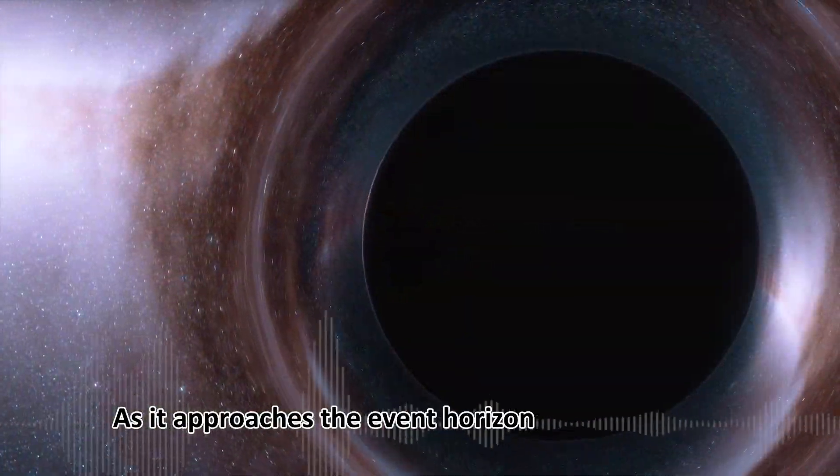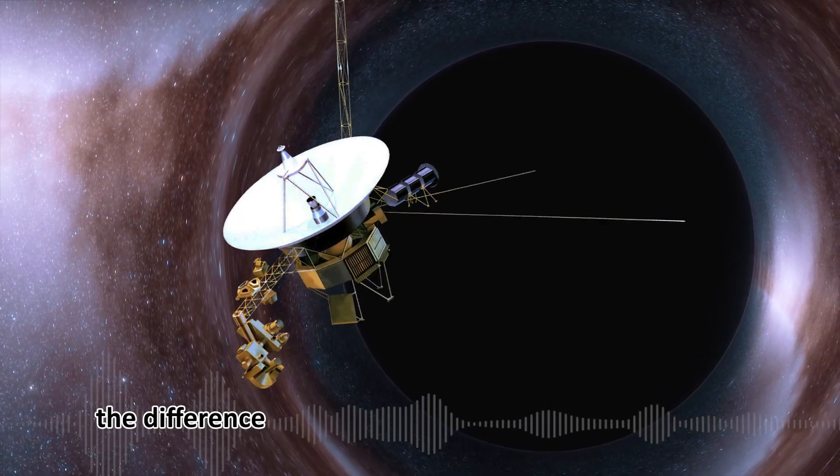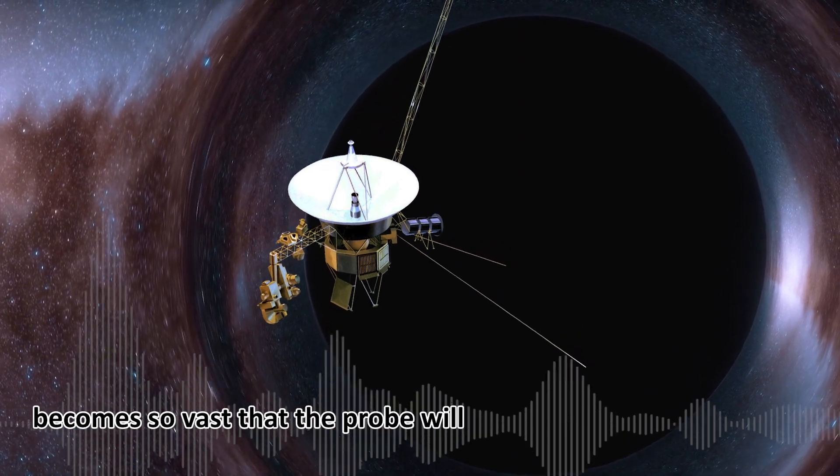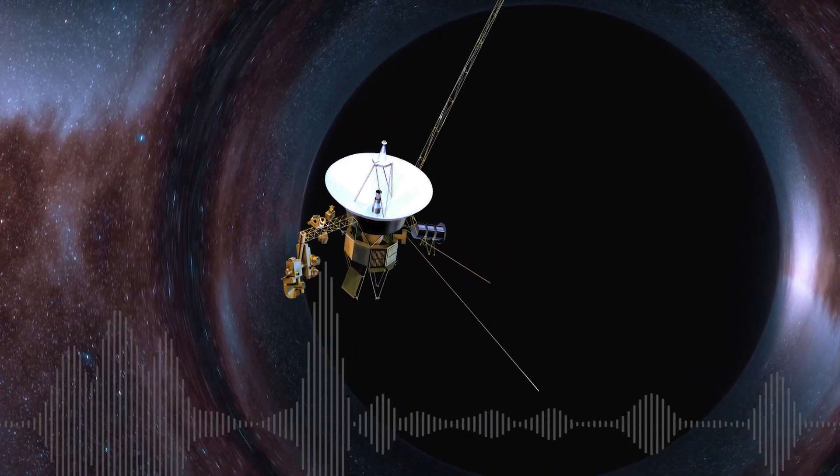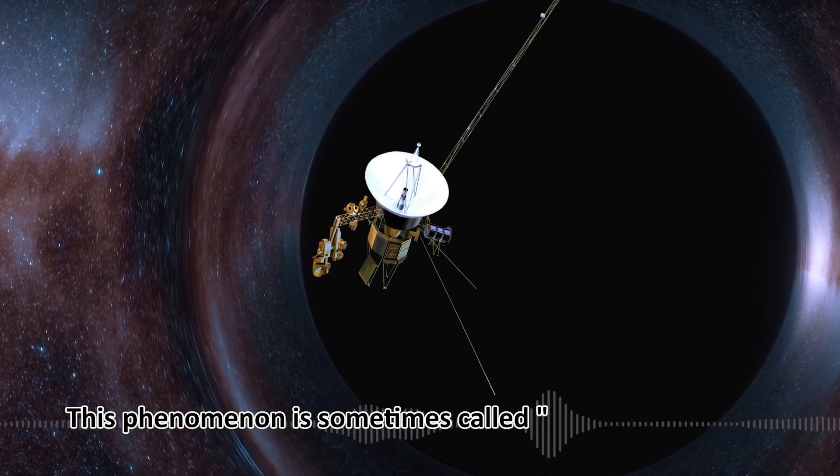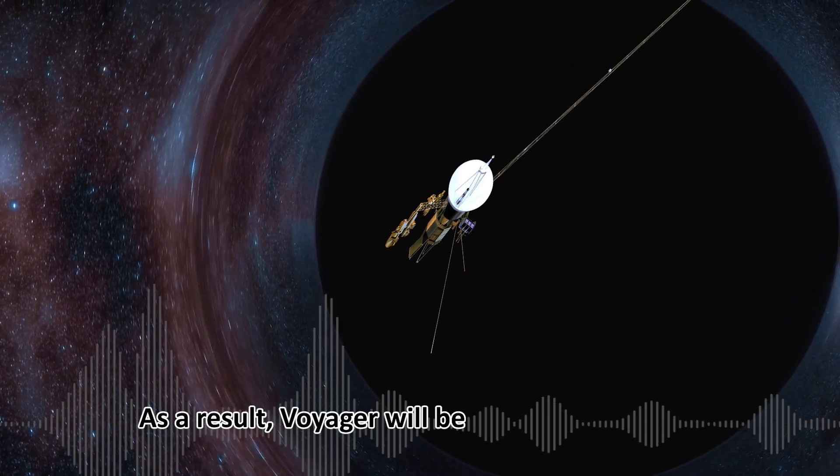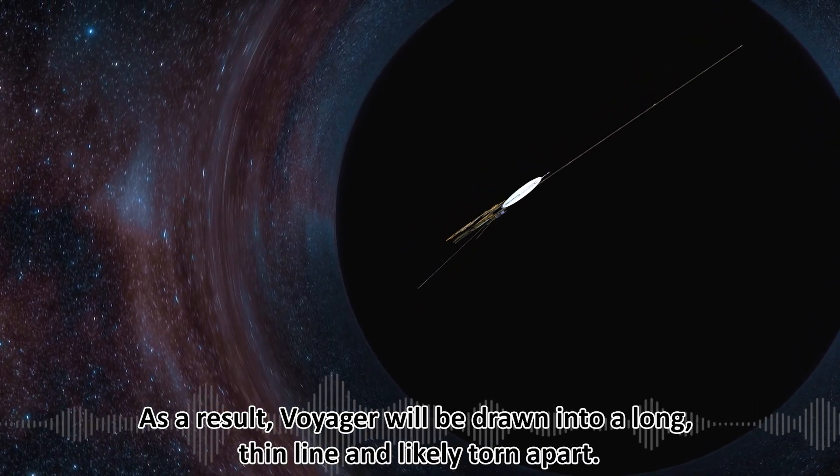As it approaches the event horizon of a black hole, the difference in gravitational pull between the front and back of Voyager becomes so vast that the probe will stretch, much like spaghetti. This phenomenon is sometimes called spaghettification or the noodle effect. As a result, Voyager will be drawn into a long, thin line and likely torn apart.